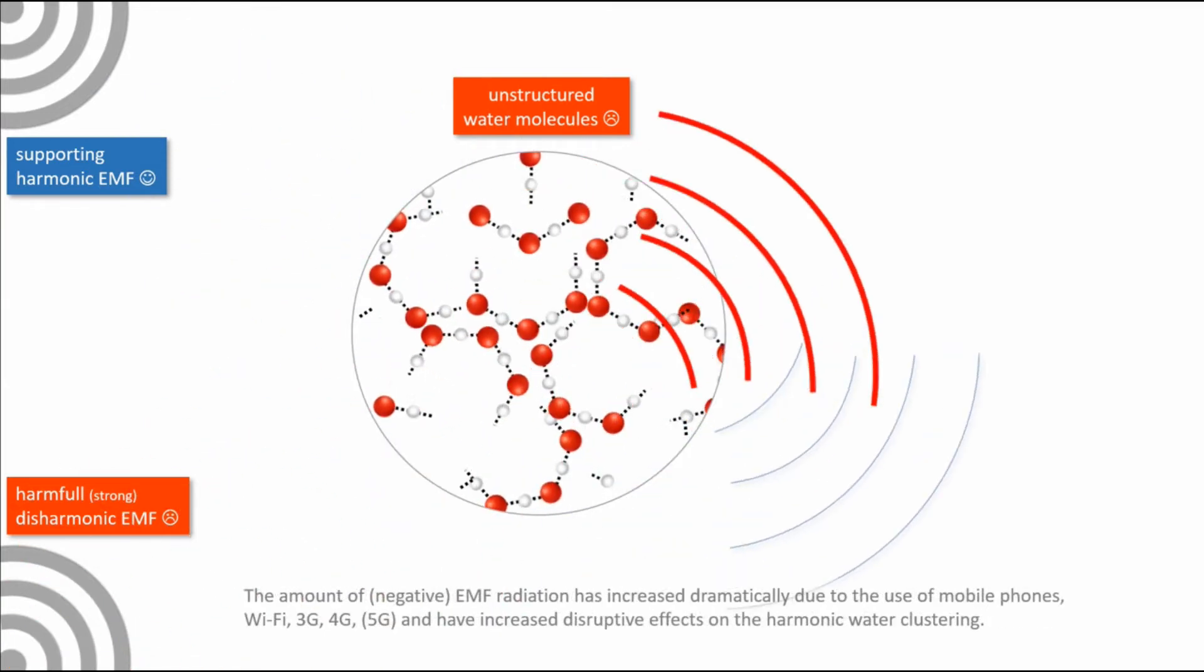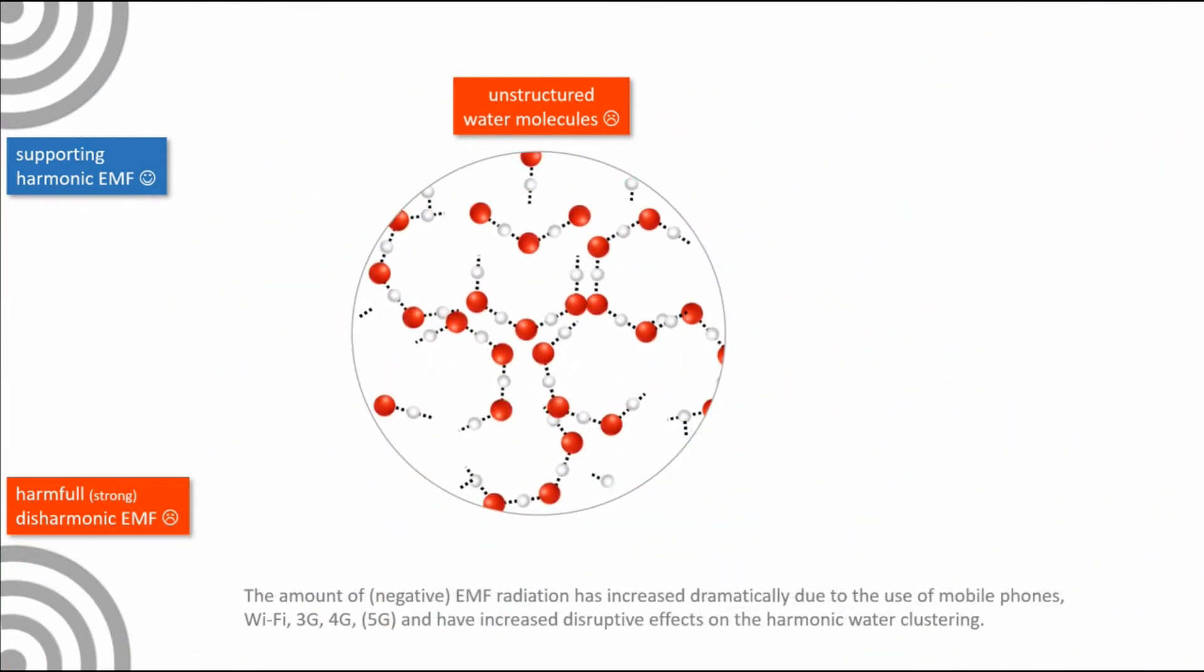The amount of negative EMF radiation has increased dramatically due to the use of mobile phones, Wi-Fi, 3G, 4G, and 5G, and has increased disruptive effects on the harmonic water clustering.